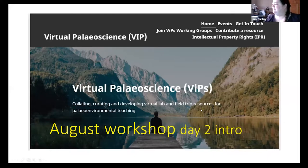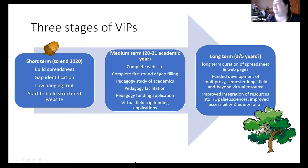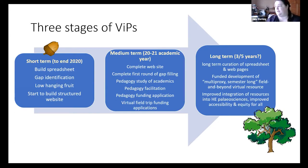The Virtual Paleo Sciences project was always designed as having three stages, thinking in terms of short-term, medium-term, and long-term goals. We're about halfway through what we thought of as short-term, which was to collate resources, identify gaps, create a plan to start going after low-hanging fruit - filling the easy gaps and starting to build this website.